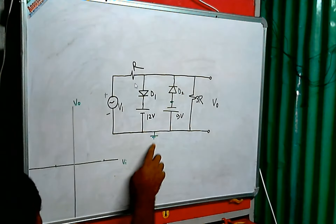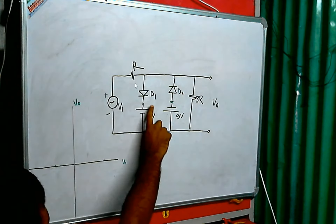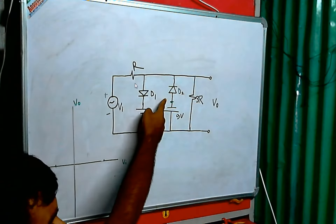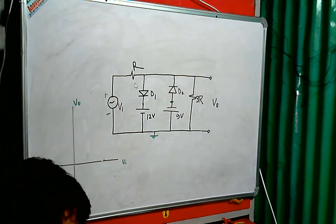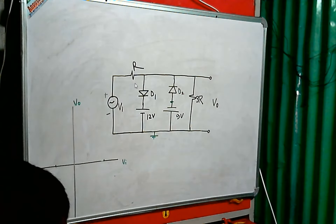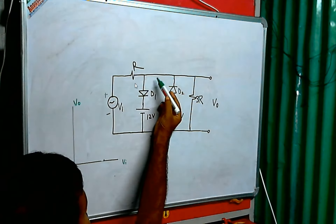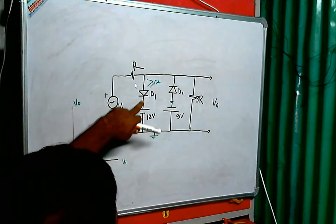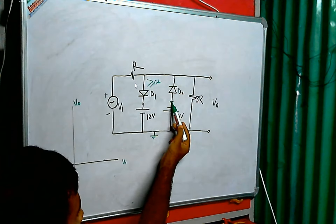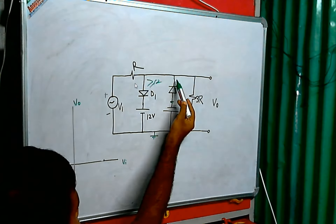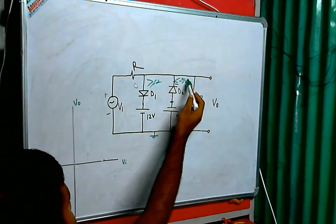For our understanding, let us assume this line as the ground line. With respect to this ground line, this point is plus 12 volts. The potential at the other point is minus 9 volts, because positive is on one side and negative on the other. Diode D1 will be on when the voltage here is greater than or equal to 12 volts. For diode D2 to turn on, the potential here must be less than or equal to minus 9 volts.